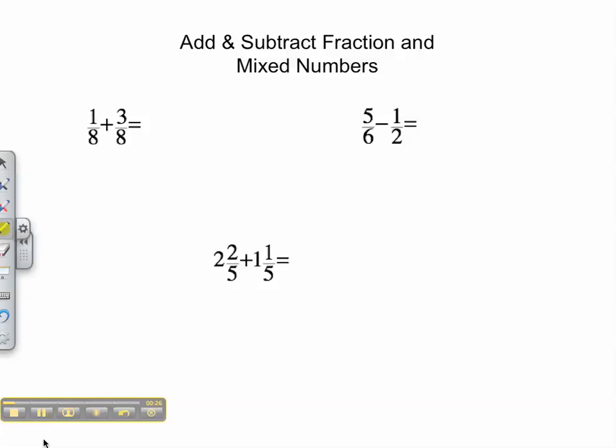In our first problem, we're lucky, we have a common denominator already. So the only thing we have to do is add the numerator, which is 1 plus 3. We keep the denominator the same and our fraction becomes 4/8 or reduced to 1/2.